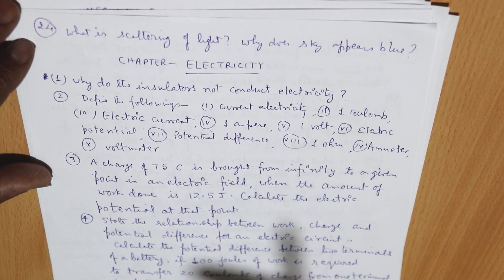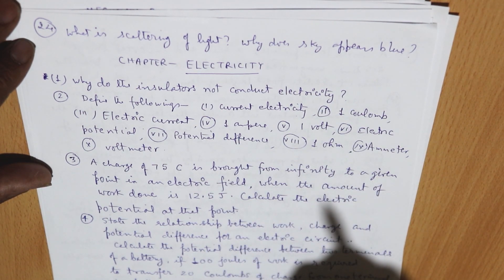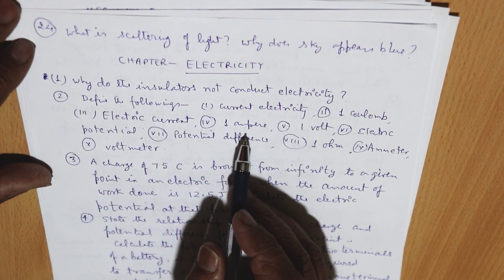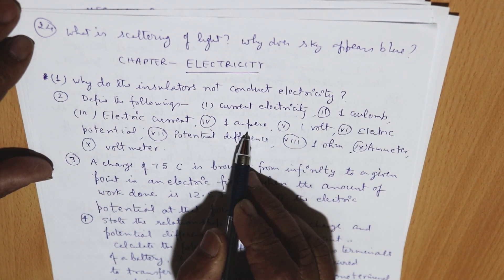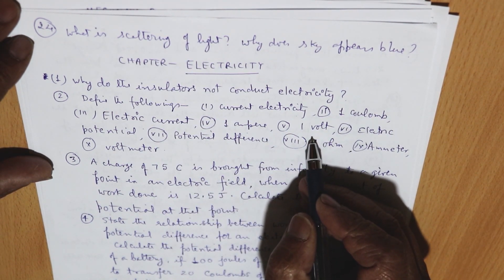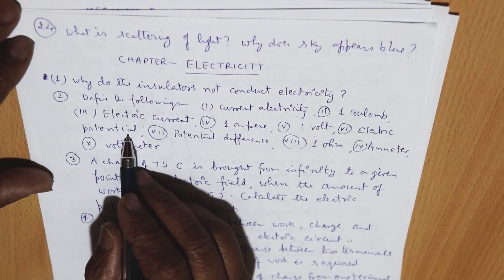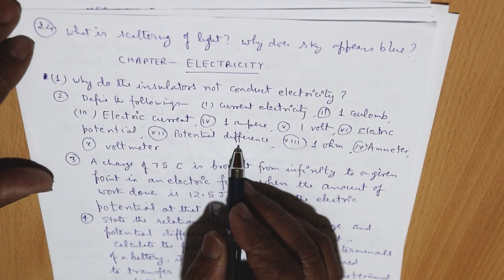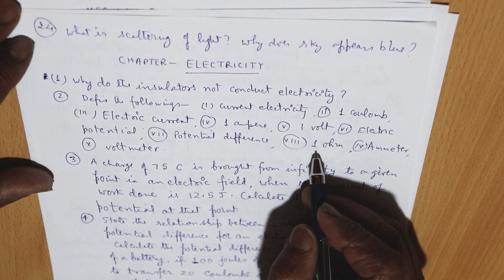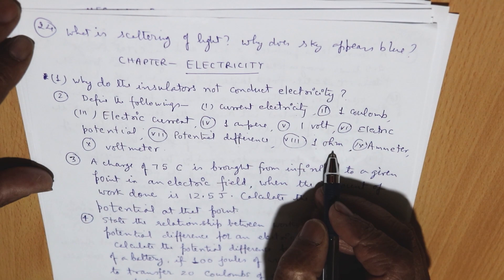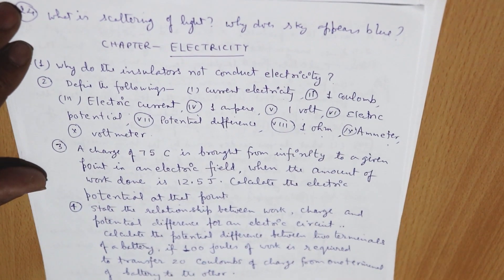Define the following: current electricity; the unit of charge — one coulomb; electric current; unit of current — one ampere; unit of potential difference — one volt; electric potential; potential difference as a whole; unit of resistance — one ohm; ammeter and voltmeter.